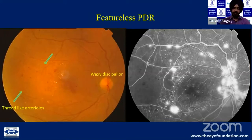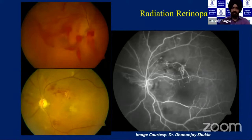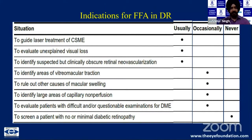Another disease that can mimic and modify diabetic retinopathy is radiation retinopathy, in which the history of radiation may be forgotten by the patient. Many years after radiation, the patient may present with vitreous hemorrhage. The characteristic here is the paucity of microaneurysms relative to the extent of capillary non-perfusion. Fluorescein angiography can guide various treatment modalities and differentiate proliferative from non-proliferative disease.